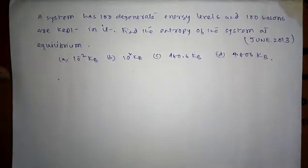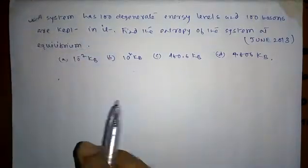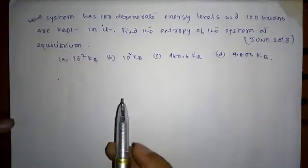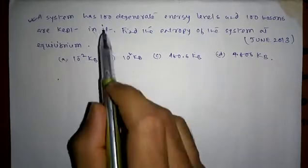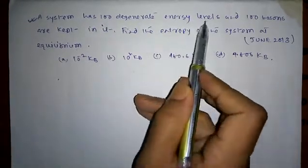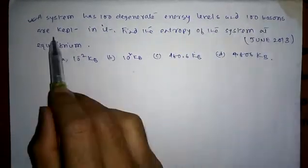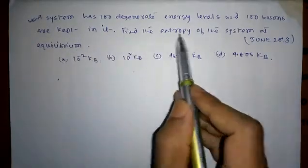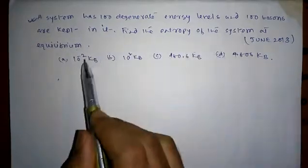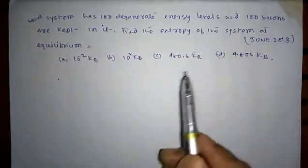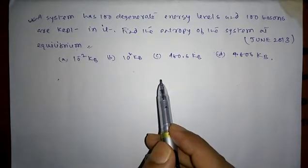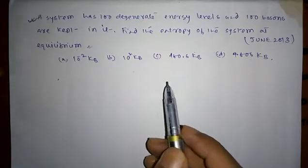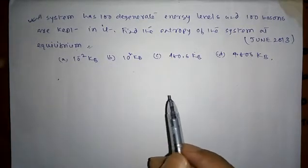Hello guys, this is a requested question from one of our subscribers. In this question, it is given that a system has 100 degenerate energy levels and 100 particles are kept in it. Find the entropy of the system at equilibrium. To solve this problem we have to know thermodynamic probability.